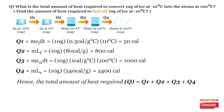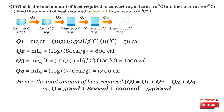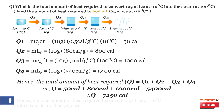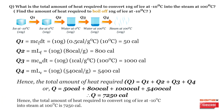Finally, the total amount of heat required Q = Q1 + Q2 + Q3 + Q4 = 50 calories + 800 calories + 1000 calories + 5400 calories = 7250 calories. Hence, the total amount of heat required to convert 10 grams of ice at minus 10°C into steam at 100°C is 7250 calories.